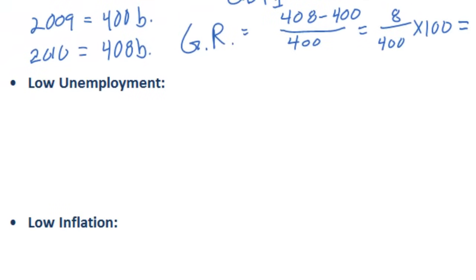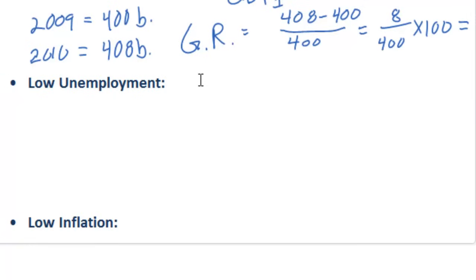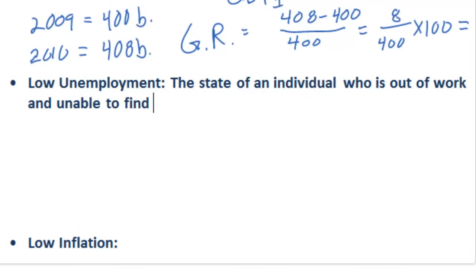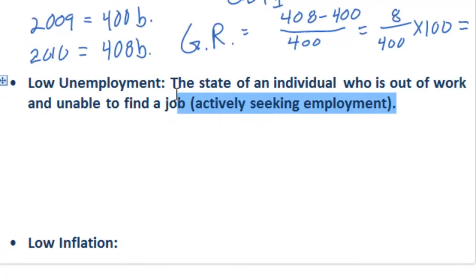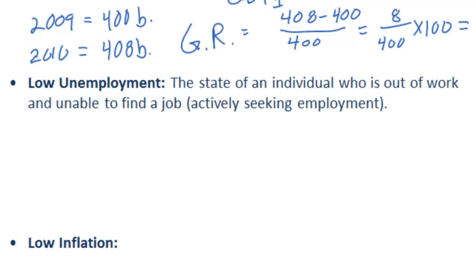Now let's move on to our second macroeconomic objective. We must define unemployment before we can determine why it is a worthy macroeconomic objective and how we calculate the nation's unemployment rate. Unemployment is defined as the state of an individual who is out of work and unable to find a job. One key characteristic is that in order to be considered unemployed, an individual must be actively seeking employment. Unemployment is clearly undesirable - people are not earning an income, and are therefore dependent on family members or the state in the form of unemployment benefits or welfare payments.